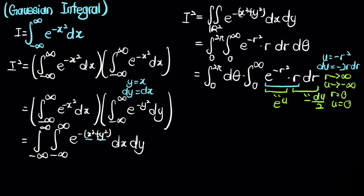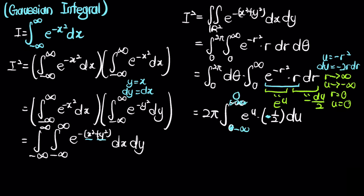For the bounds of integration: as r approaches infinity, u approaches negative infinity, and when r equals 0, u equals 0. So i squared equals the antiderivative of dθ from 0 to 2π, giving 2π times the integral from 0 to negative infinity of e to the u times negative 1 over 2 du. Taking the negative and switching the bounds gives negative infinity to 0, and the 1 over 2 cancels with the 2, leaving π times the integral from negative infinity to 0 of e to the u du.